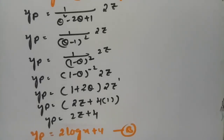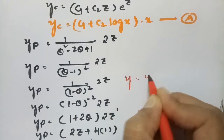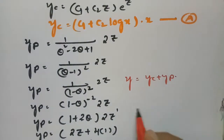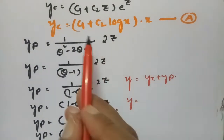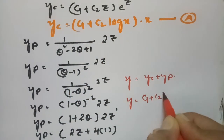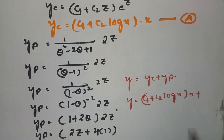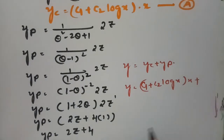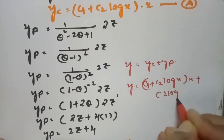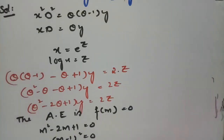Therefore, the general solution y = yc + yp is: y = (c1 + c2·log x)·x + 2 log x + 4. This is the solution for the first Cauchy's Euler equation.